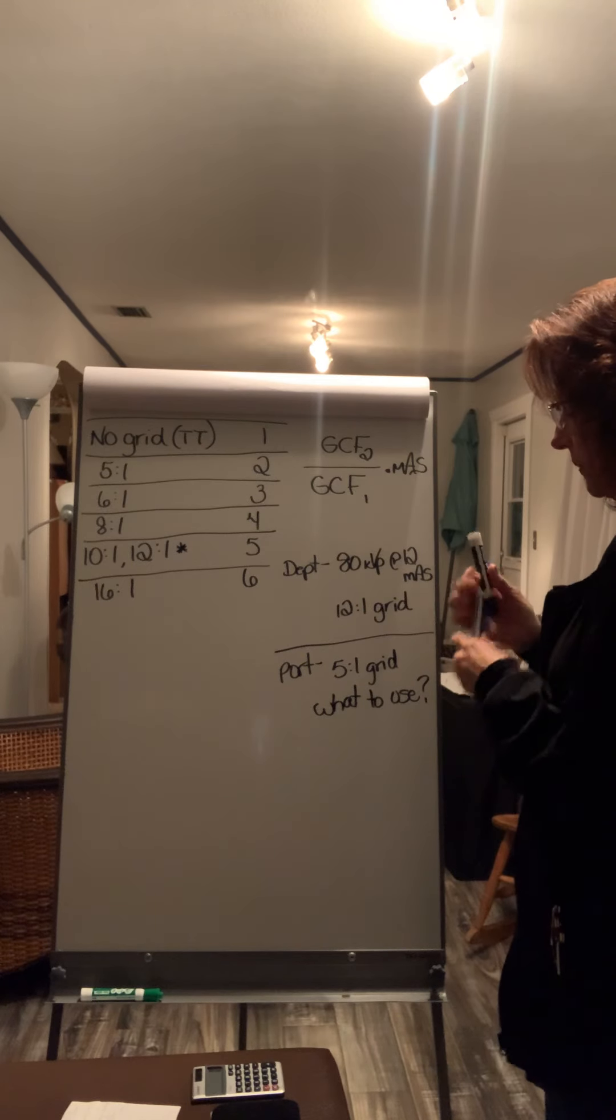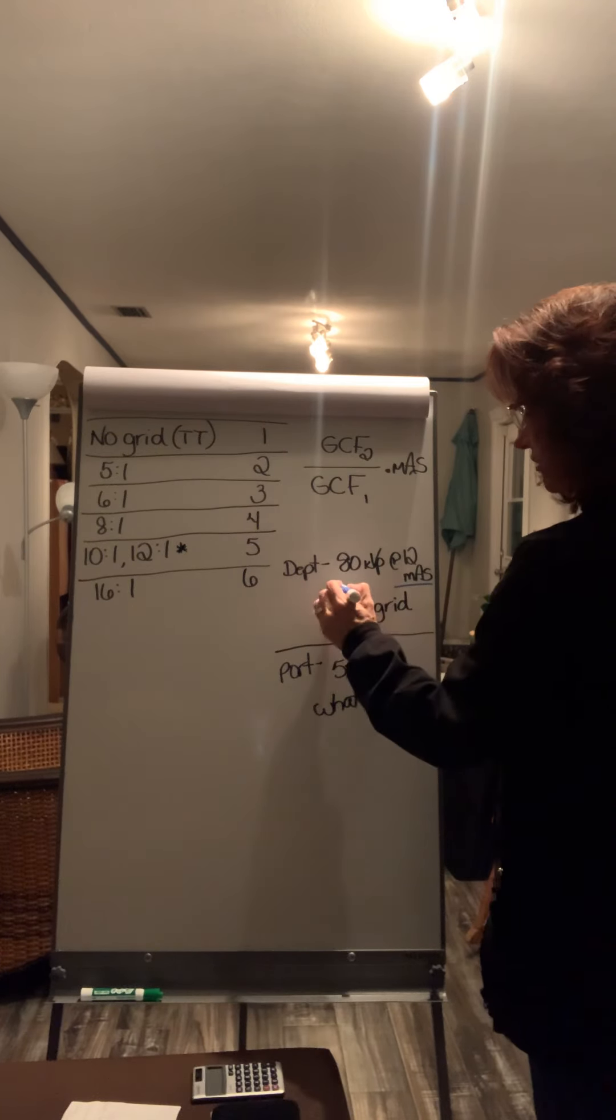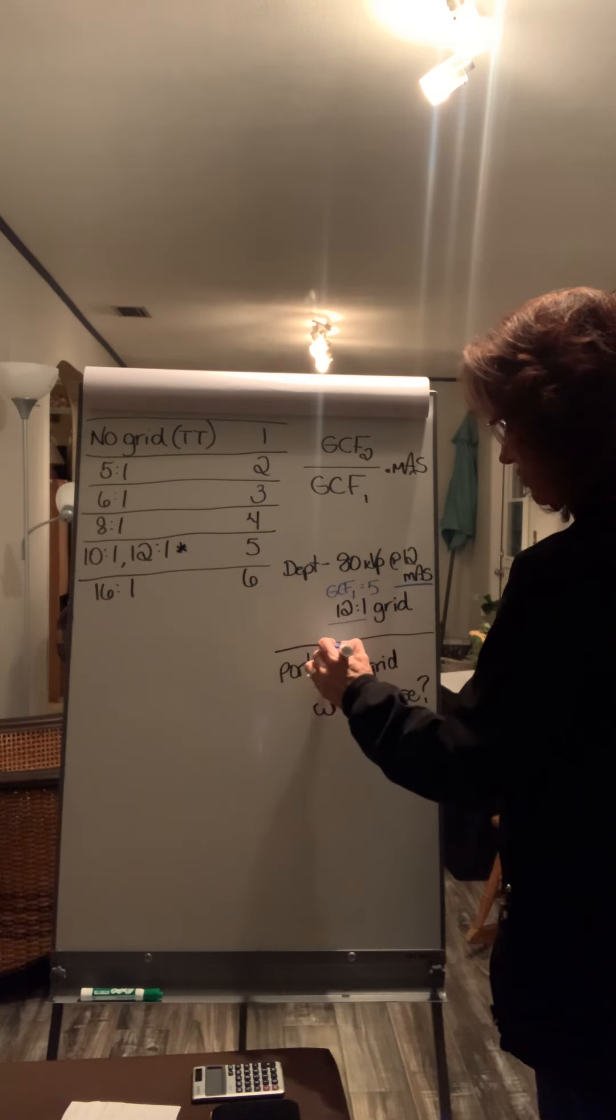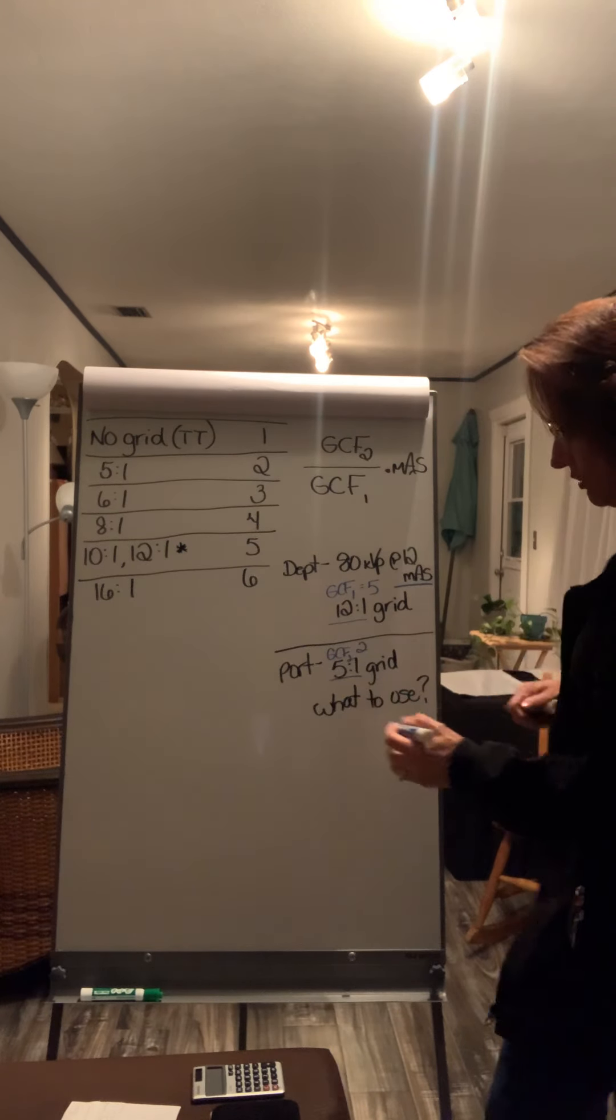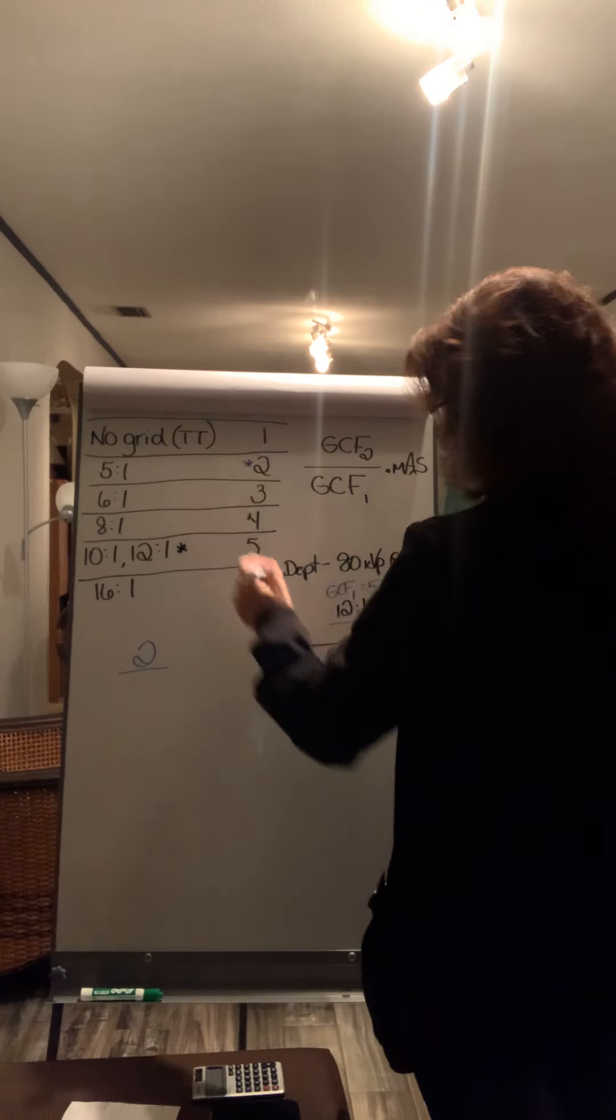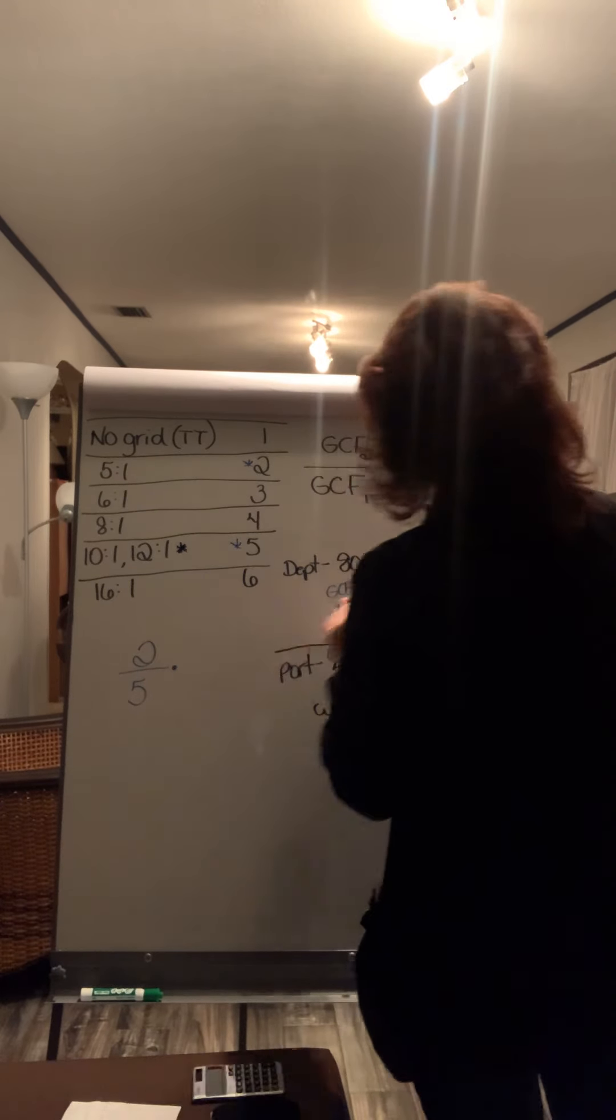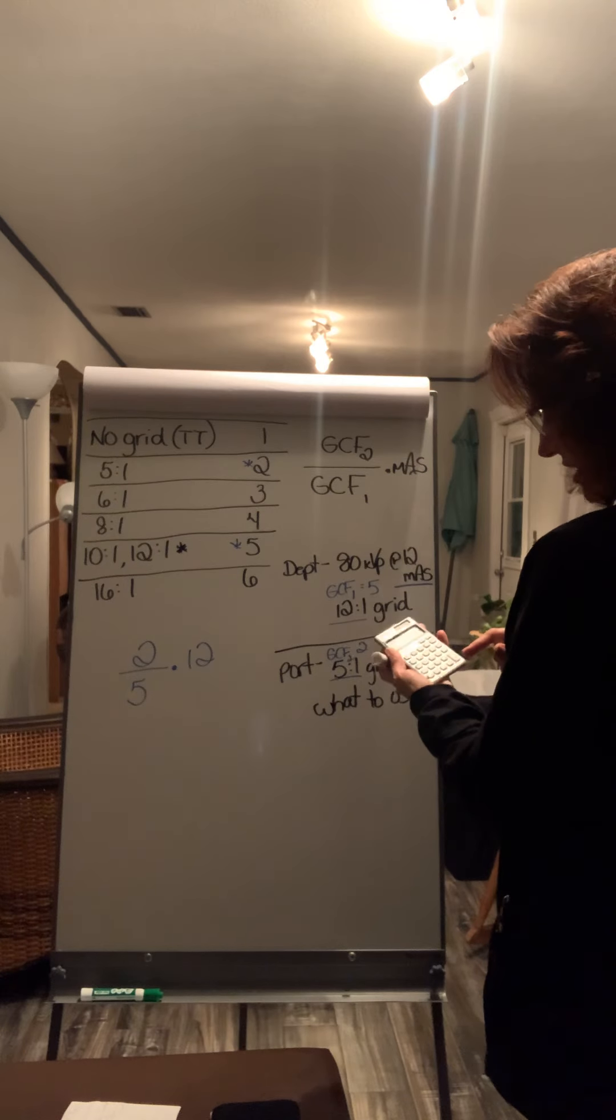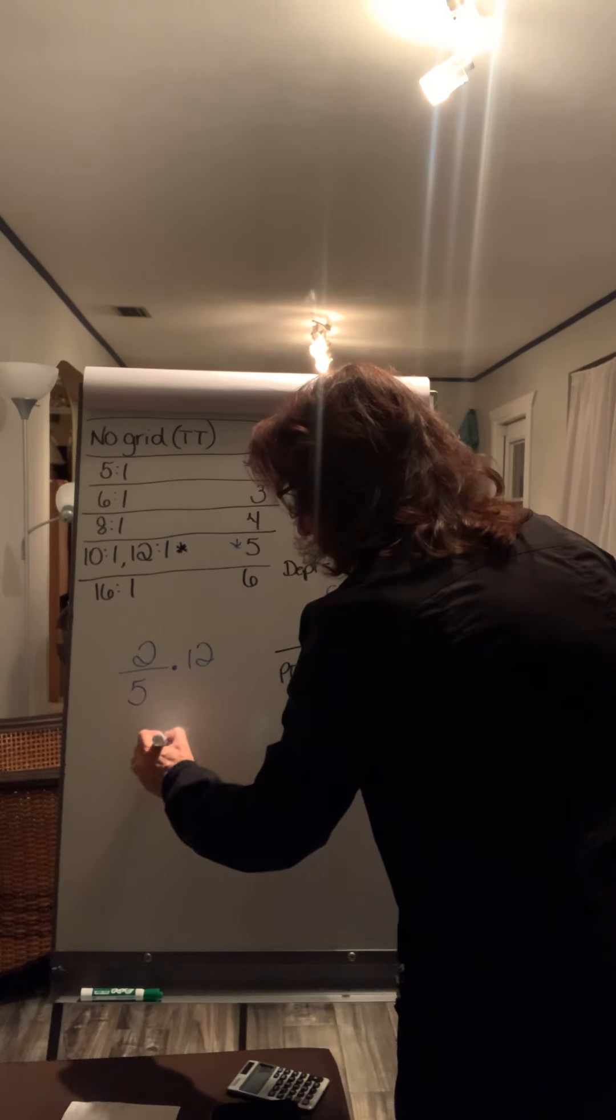If we go through and label that here, we have our 12 mAs, which is our mAs value. We have a 12 to one grid, which is a grid conversion factor. This is the first one. It's a five. And the portable is a five to one. So that's our second grid conversion factor. And that's a two. So the formula says GCF two, which is two because it was a five to one. So it's this over GCF one, which is a 12 to one. So that's a five times your mAs value, which is 12. So two divided by five is 0.4 times 12, which ends up being 4.8 mAs.